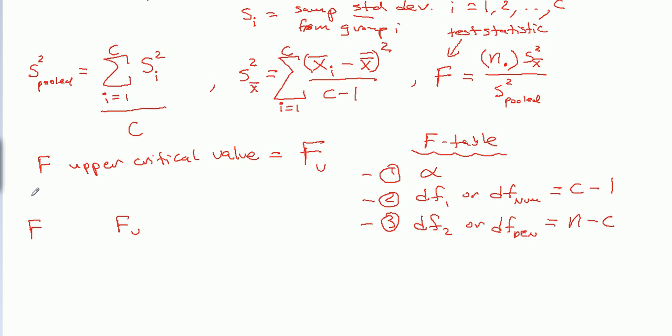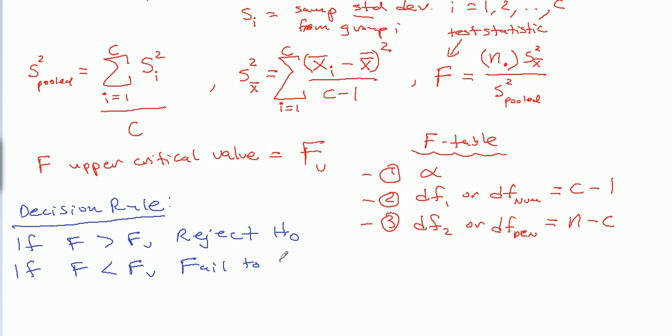Decision rule for one-way ANOVA. If f is greater than fu, you reject the null hypothesis. If f is less than fu, you fail to reject the null hypothesis. It's as simple as that.